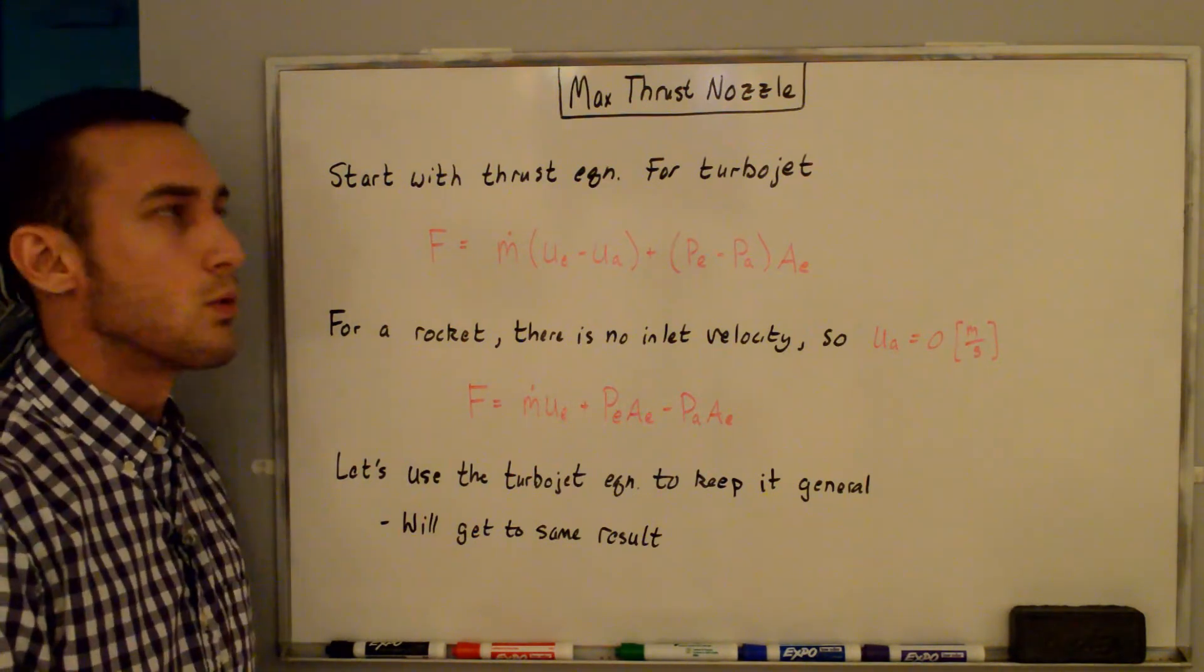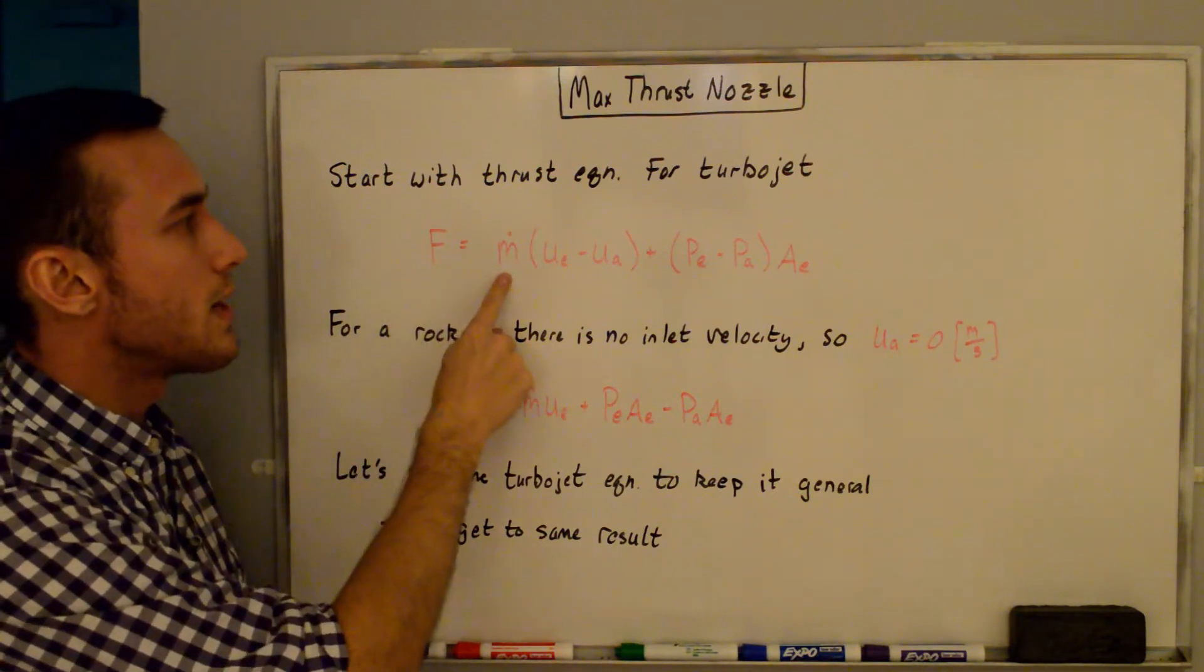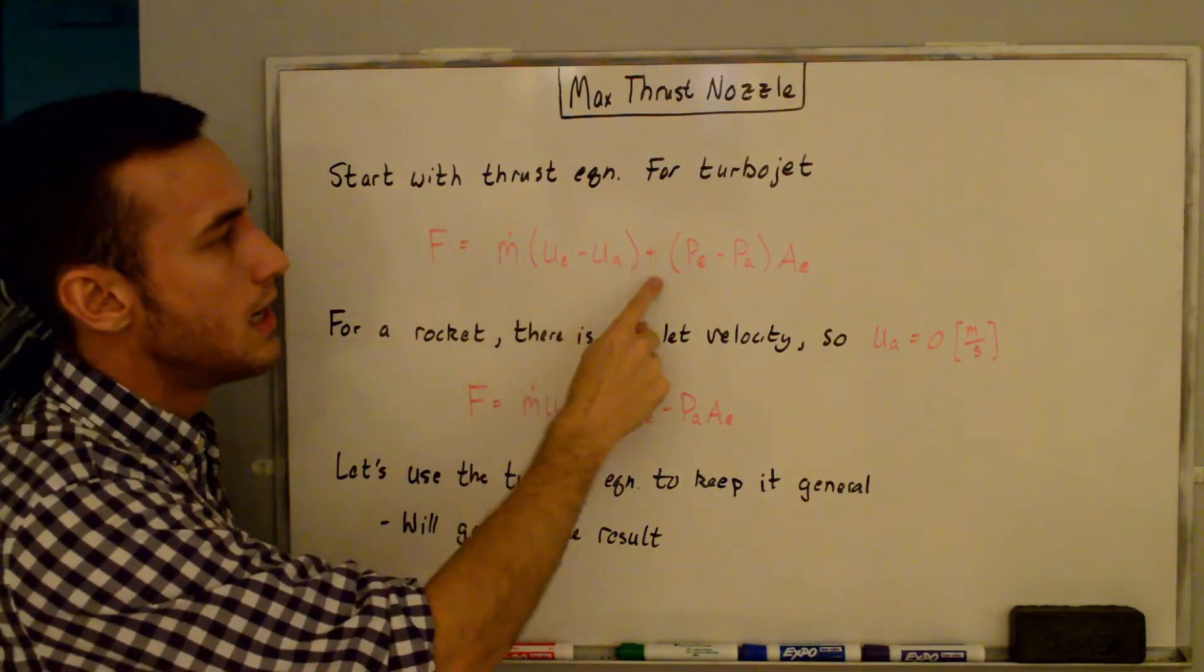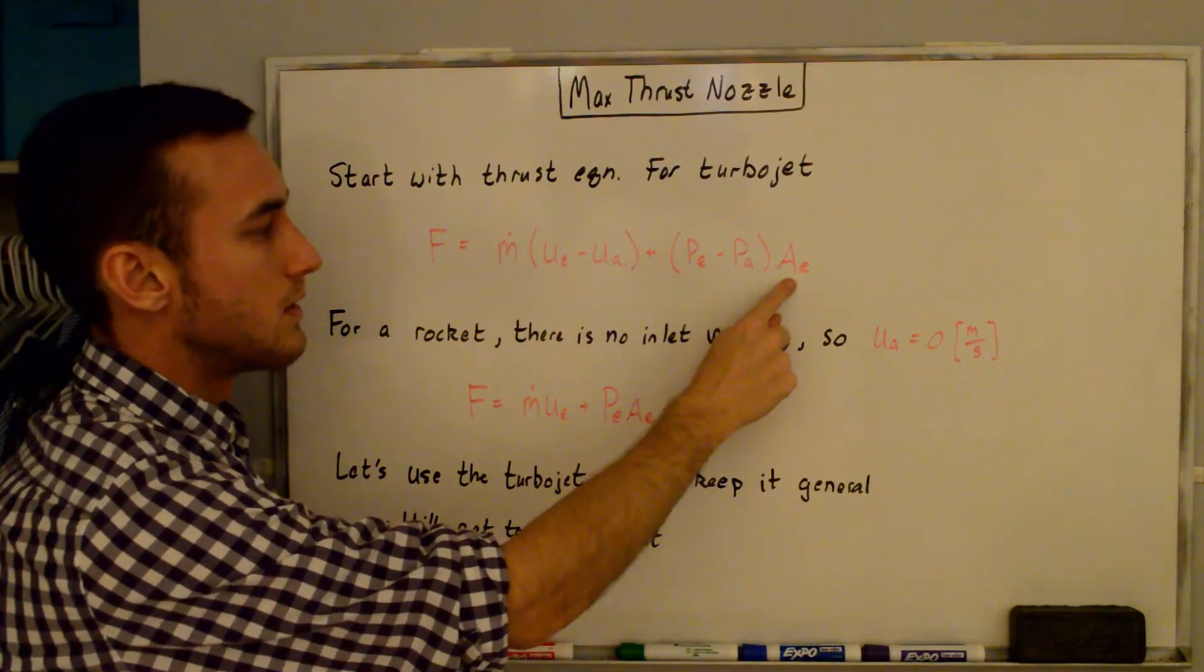So we're going to start with the equation for the thrust for a turbojet, and that's shown here. The thrust is equal to the mass flow rate times the exit velocity minus the inlet velocity plus the exit pressure minus the atmospheric pressure times the exit area.